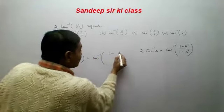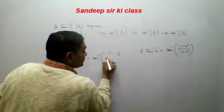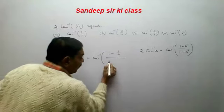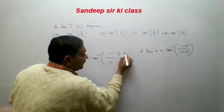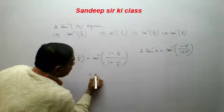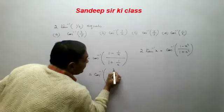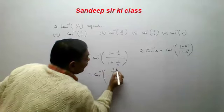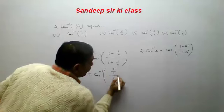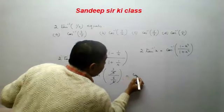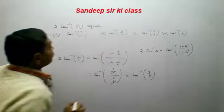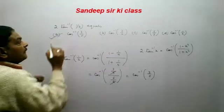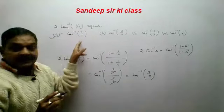Substituting x = 1/2: 2tan⁻¹(1/2) = cos⁻¹((1 - 1/4)/(1 + 1/4)) = cos⁻¹((3/4)/(5/4)) = cos⁻¹(3/5). So option A is correct: the value of this function is cos⁻¹(3/5).